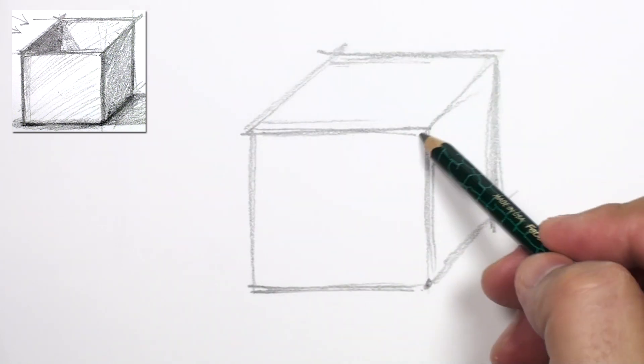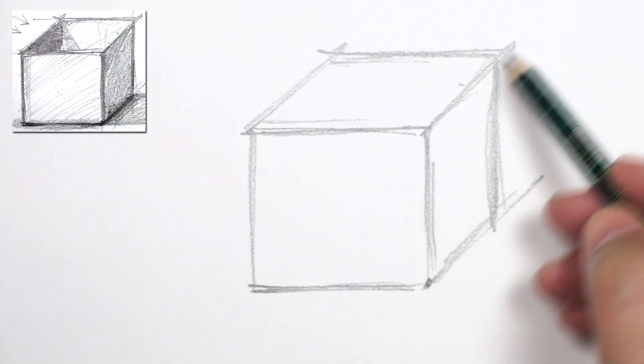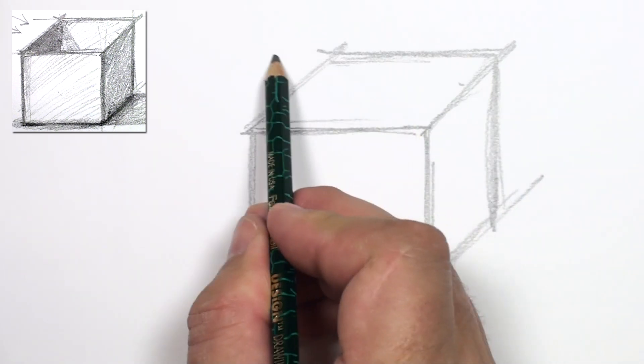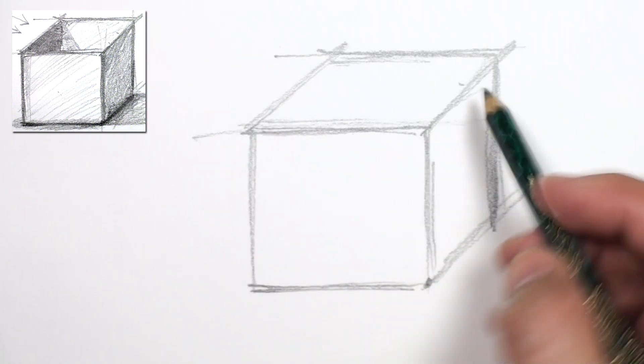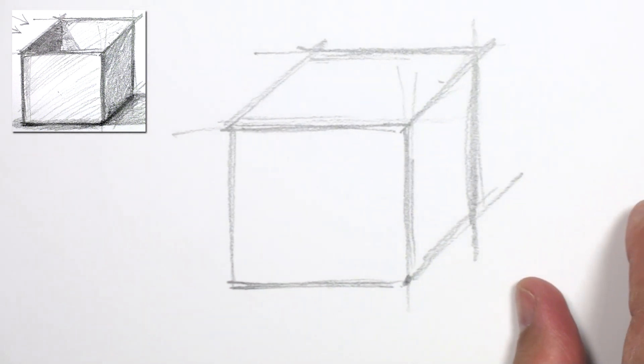Here's what's important. It's important that these lines are parallel to each other, meaning they go at the same angle, and that these lines are parallel to each other, and that these are parallel to each other. Because if you get that wrong, your box looks distorted.